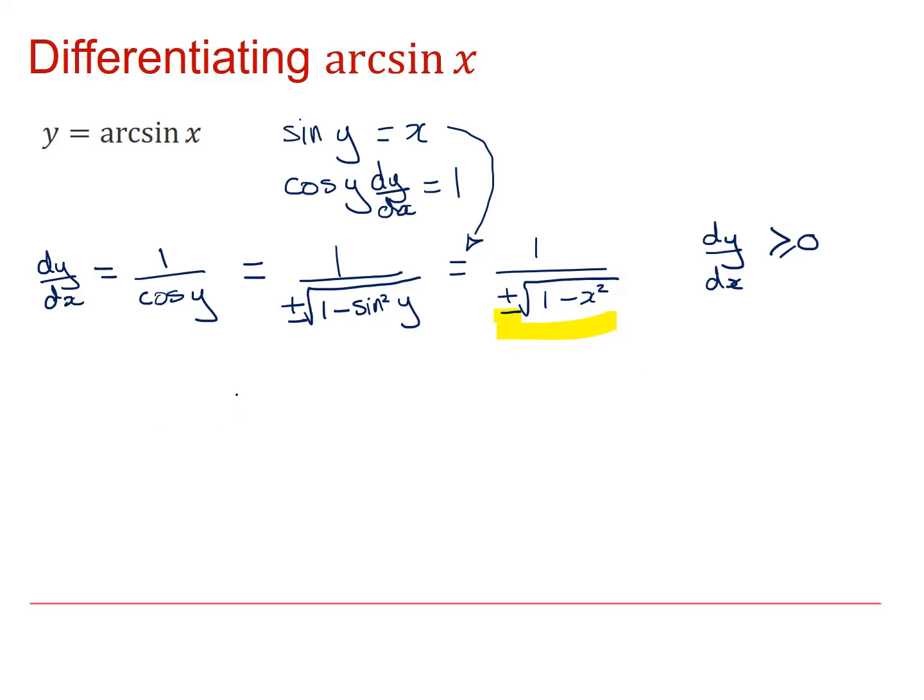So this gives me that my derivative, d/dx of arcsin x, is equal to one over square root of one minus x squared.